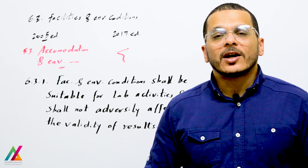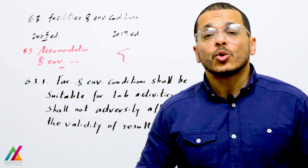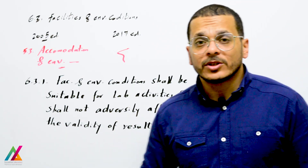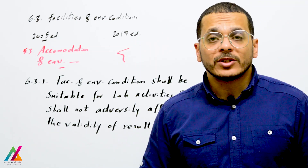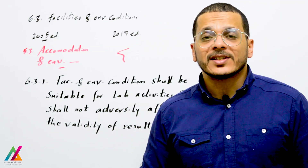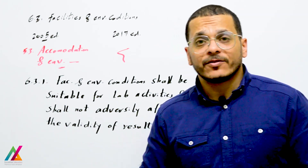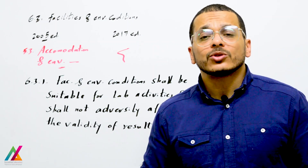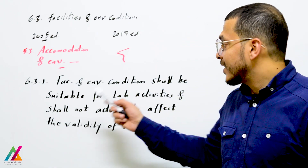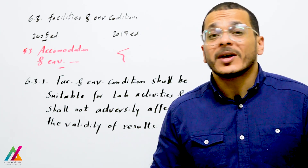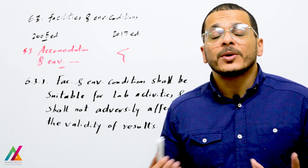Welcome back to a new lecture on ISO 17025 2017 edition. We are still in resources requirements, now covering clause 6.3 - Facilities and Environmental Conditions, which was clause 5.3 in the 2005 edition. This covers facilities related to equipment, instruments, and the building itself, as well as environmental conditions such as temperature, humidity, vibration, and others.